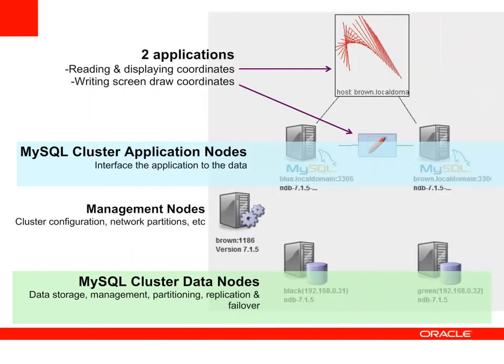Here we see the configuration that's going to be used for the demo. There are two applications running at the top of the screen. The first, noted by the red pen, is writing screen draw coordinates to the database. The second is reading and displaying those coordinates, represented by the red lines moving in the display window.